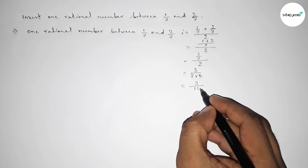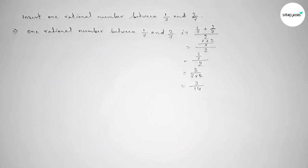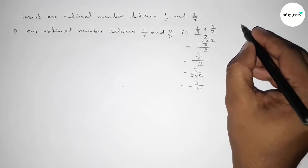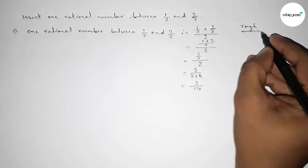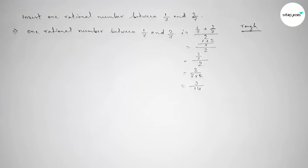So 3/14 is a rational number between 1/7 and 2/7. Now roughly discussing some important calculations. We know that 1 is always less than 2, so we can write 1 < 2.